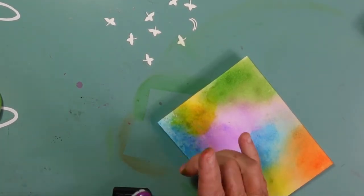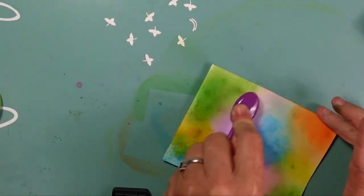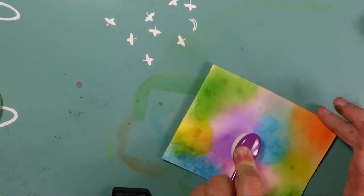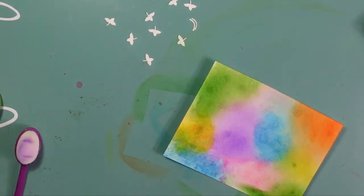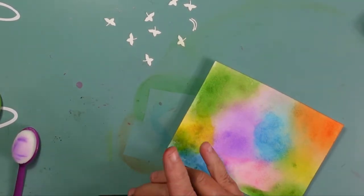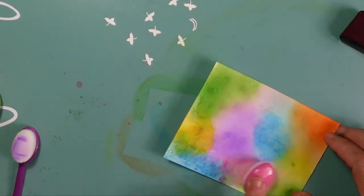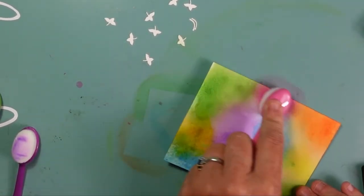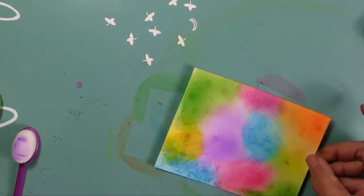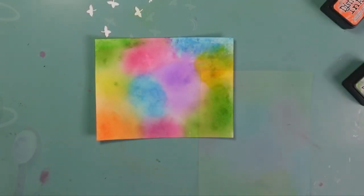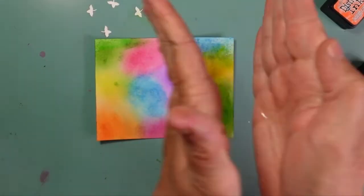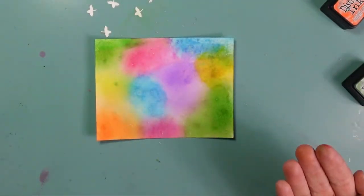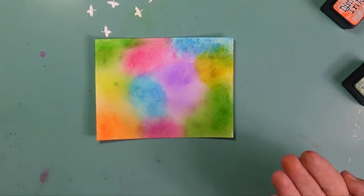This card is going to be four and a quarter by five and a half inches, so I will bring in a black top folding card base that has been cut to that size. I wanted that little pop. I think that these vibrant colors are going to pop on that black, and so I chose to add a black card base. I like to have a little bit of an edge going around my cards. I think it adds so much.